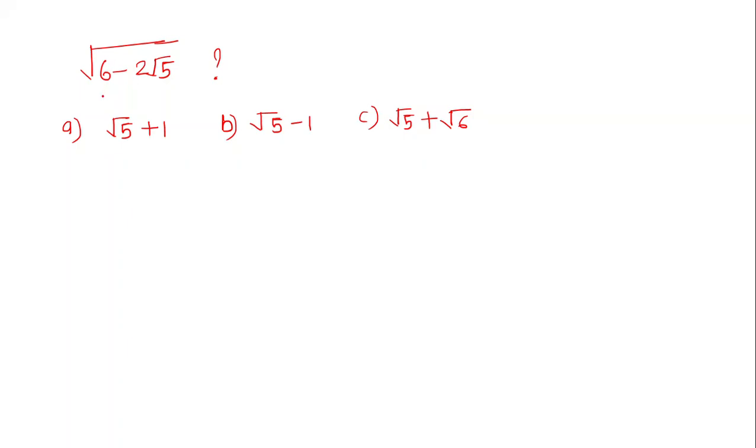Hello friend, today in this problem we will find the simplified value of square root of 6 minus 2 root 5. We have three options: a, b, and c. Let us check which option is correct.